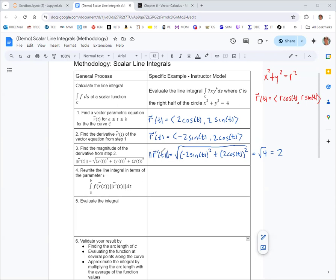So that magnitude of r gets put in there. You can see that appearing essentially like a Jacobian-type quantity in the integral itself. We also need to rewrite the function in terms of the parameter t.